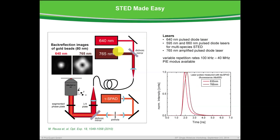We have, as excitation laser, the 640 nanometer, and a STED laser — a high-power 765 nanometer laser. These two are overlaid and fiber-coupled, and the output of the fiber goes into the main optical unit of our microscope. Inside the microscope, the two lasers take exactly the same beam path. The output of the fiber is linearly polarized; we need a quarter-wave plate to have circular polarization. The lasers are reflected by a dichroic mirror and then passed into the sample, focused with a high numerical aperture objective. The donut is created with a very special segmented face plate, which leaves the excitation laser unaffected.